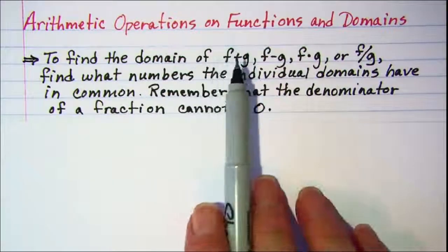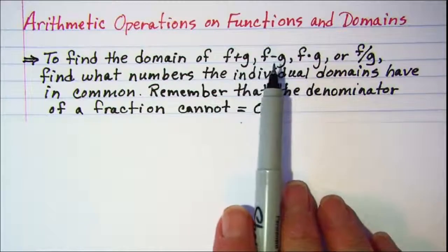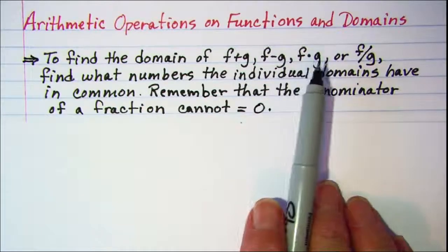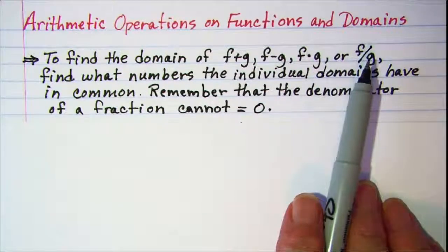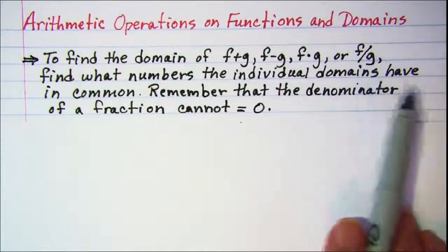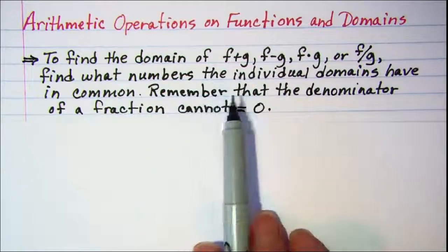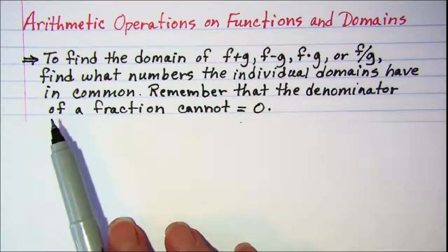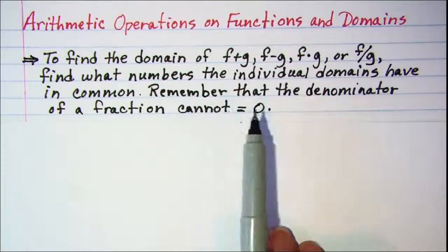To find the domain of f plus g, f minus g, f times g, or f divided by g, you need to find what numbers the individual domains have in common, and then remember that the denominator of a fraction cannot equal zero.